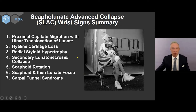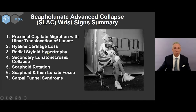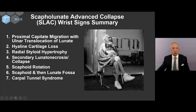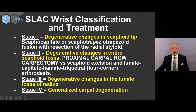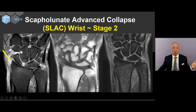Finally, we turn to scapholunate advanced collapse — also known as SLAC wrist. You are looking for proximal capitate migration. The lunate may migrate to the ulnar side — so-called ulnar translocation of the lunate. There is extensive arthritis. One of the earliest signs at stage one of SLAC wrist is radial styloid hypertrophy. You can get secondary AVN of the lunate, scaphoid rotation, destruction of the scaphoid, and then lunate fossa of the radius, and finally carpal tunnel syndrome. The Watson classification — four stages of SLAC wrist: stage one — degenerative changes only in the scaphoid-styloid tip; stage two — involvement of the scaphoid fossa of the radius; stage three — involvement of the lunate fossa; stage four — involvement of the entire wrist.